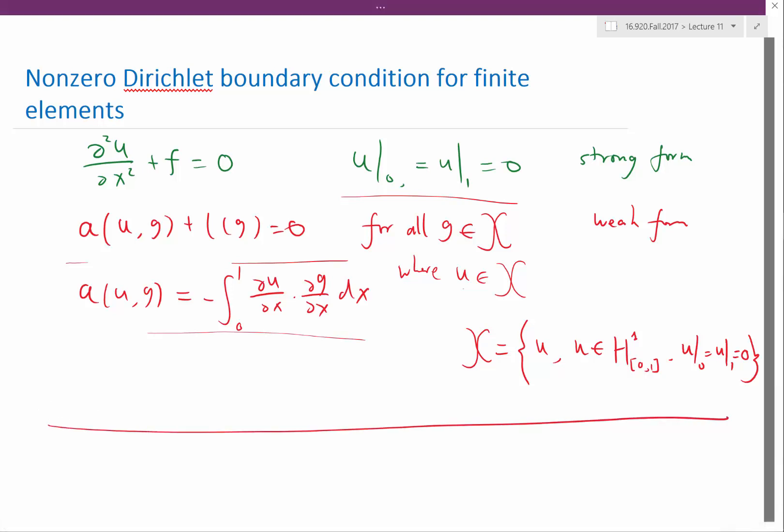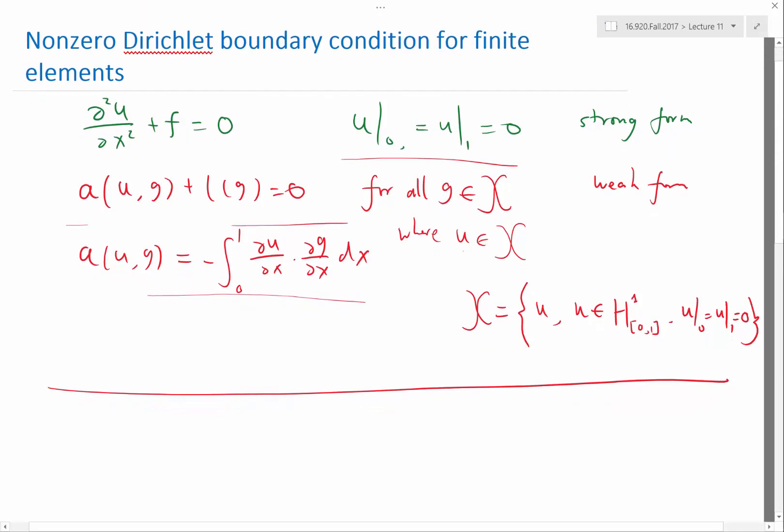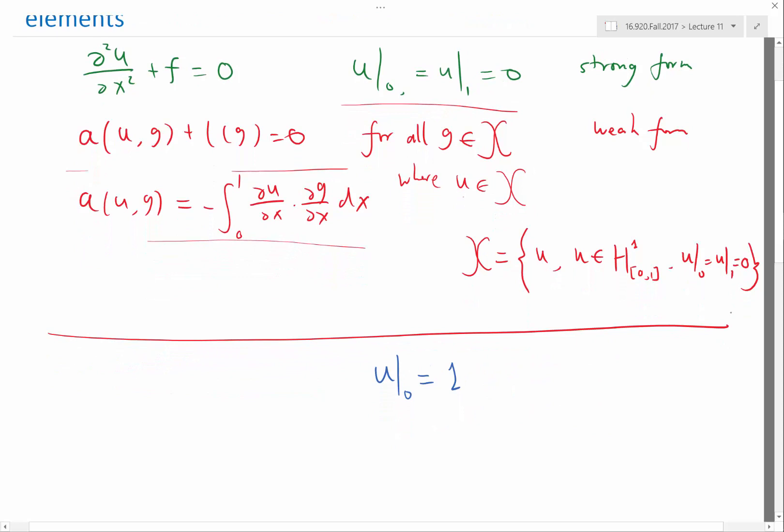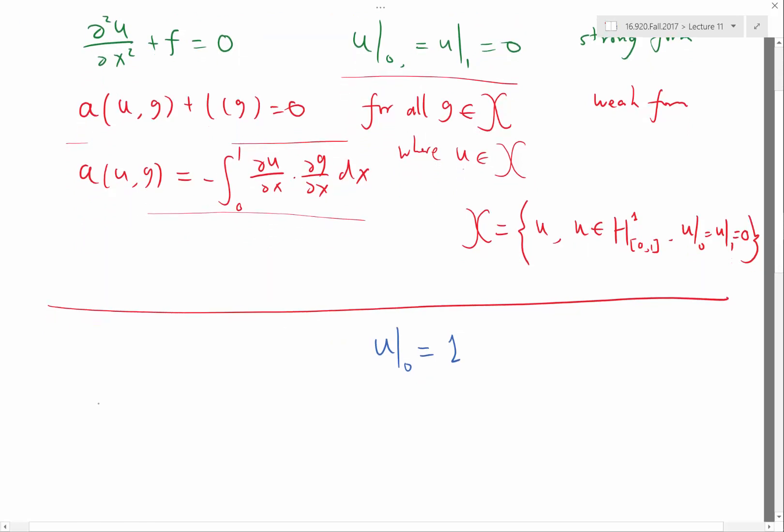So this is how we enforced a zero Dirichlet boundary condition. Now let's get to the point of enforcing a non-zero Dirichlet boundary condition. A natural way to think about it is, let's say, if we have u(0) equal to 1, just for instance.